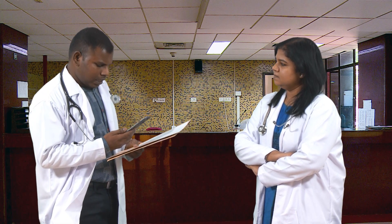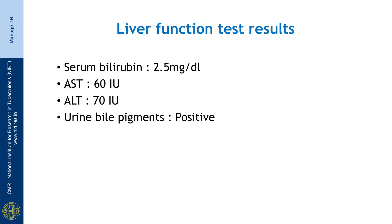When are the liver function test results expected? I just received a message, madam — her results have arrived. Her serum bilirubin is 2.5 milligrams per deciliter. Her AST is 60 international units and her ALT is 70 international units. She has jaundice. Her urine bile pigments are also positive.